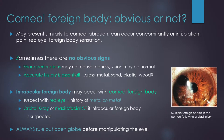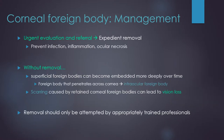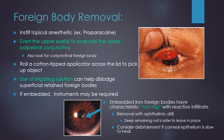Finally, you should always rule out open globe before manipulating the eye. Corneal foreign bodies require urgent evaluation and referral for expedient removal. Without removal, superficial foreign bodies can become embedded more deeply over time, and if they penetrate across the cornea, they can become an intraocular foreign body. Intraocular foreign bodies can also occur at the time of injury. Retained foreign bodies can cause scarring that can ultimately lead to vision loss.